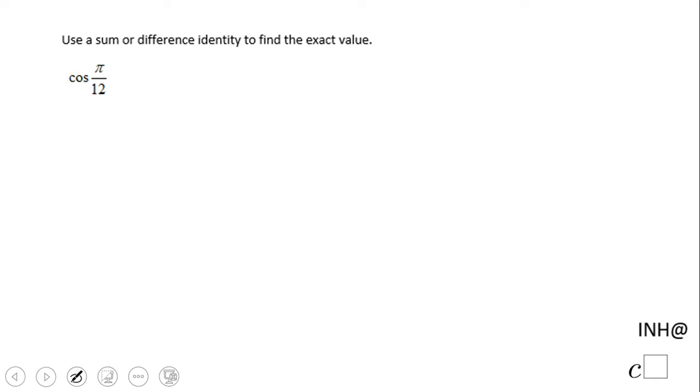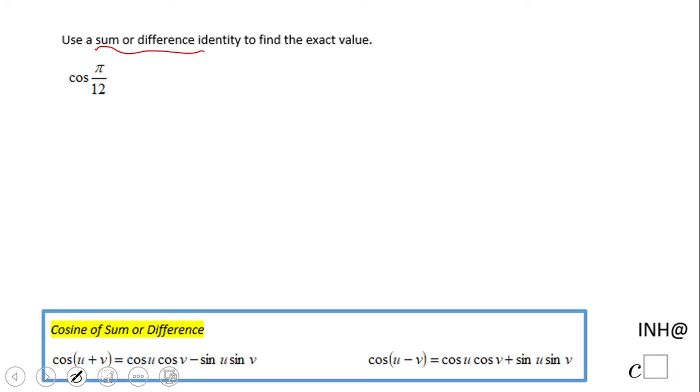Welcome back. In this example, we're going to find the cosine of π/12 using either a sum or a difference identity. Since this is a cosine, we have these two choices.